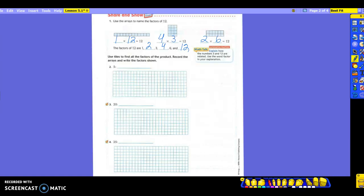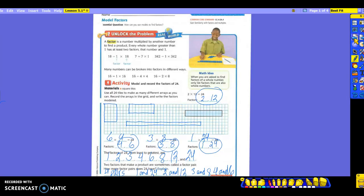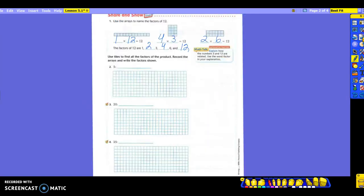Alright. On number 2, it says to use tiles to find all of the factors of the product. Then record the arrays and write the factors shown. So you're going to write the factors on the line, but you're going to show me how to make the arrays just like over here. Are you with me? So you're going to do all of them for number 2. Do just number 2 first.